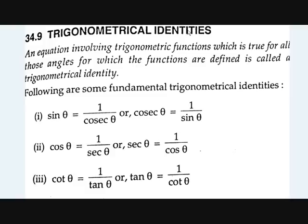Now let's take trigonometrical identities. An equation involving trigonometric functions which is true for all those angles for which the functions are defined is called a trigonometrical identity. We know the six trigonometrical functions: sin, cos, cosecant, cot, tan, and secant. These equations must hold for all angles for which the functions are defined — those are called trigonometrical identities.